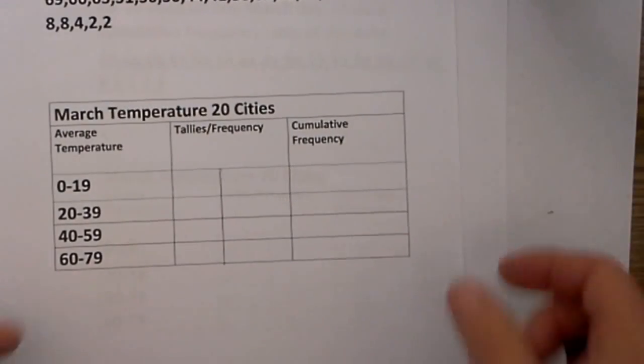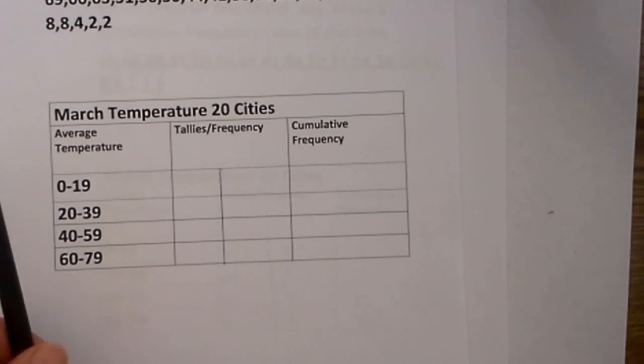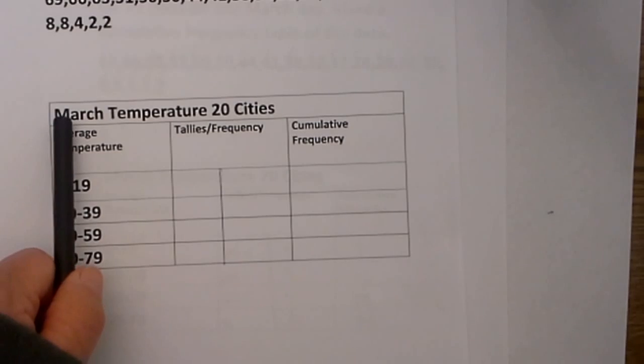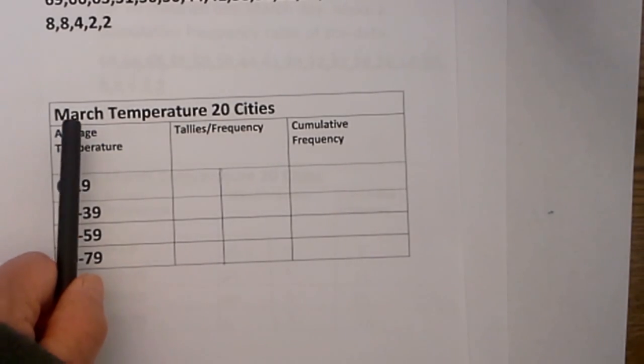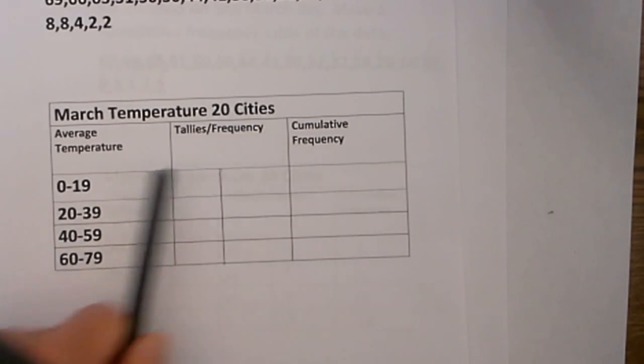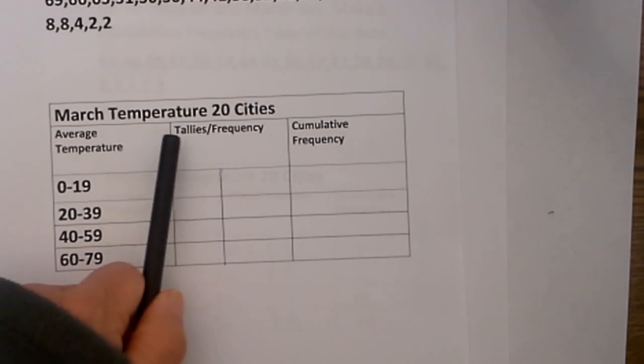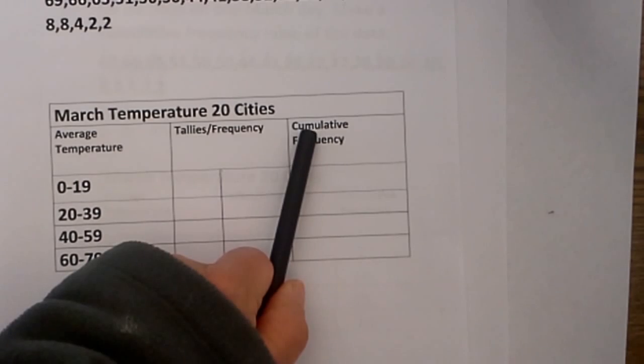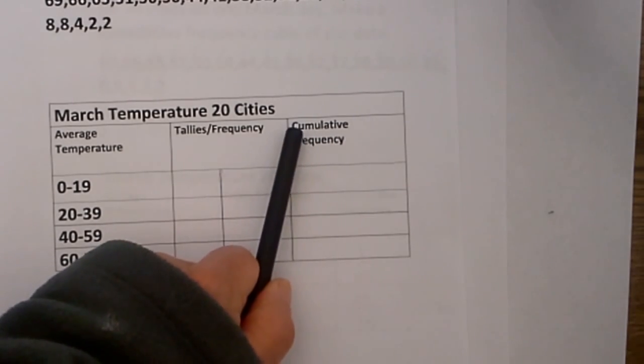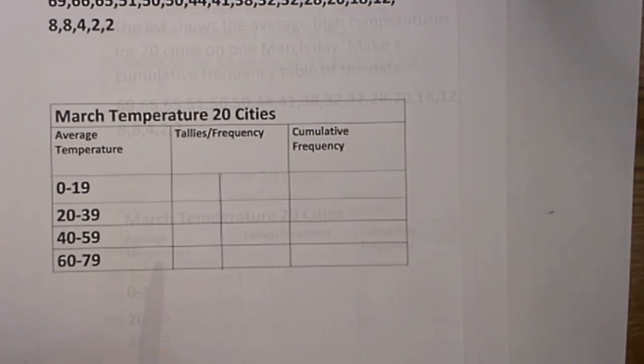So let's take a second and go over what is in a cumulative frequency data table. If you will notice, first I have the title of the table. In this case we have March temperatures for 20 cities. I have a column for the intervals and I have titled what each interval stands for, which is average temperature. I have a column for tallies, a column for frequencies, and then your last column which is titled cumulative frequencies. Those are kind of the basic ingredients that you need in your frequency table.